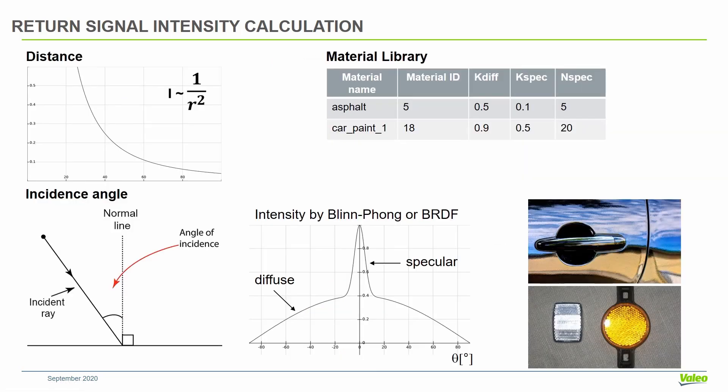To calculate the intensity of the return signal, we are using the distance, which is simply 1 over distance squared. We use a custom material library, where different materials can have different reflectivity properties. Asphalt will reflect relatively little light, while car paint will reflect a lot of light.